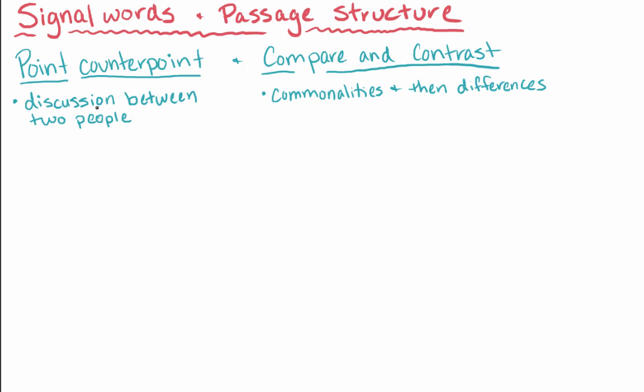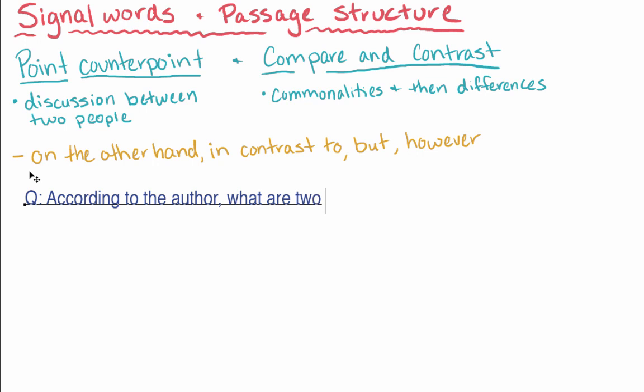Noticing when passages have these structures will help you know where to look to see how positions or concepts might differ. Phrases like on the other hand, in contrast to, but, or however, are likely to appear in these kinds of texts, and they can help you to identify distinctions that the author is trying to make. An example of a question that you might use these ideas to answer is, According to the author, what are two perspectives on this issue?